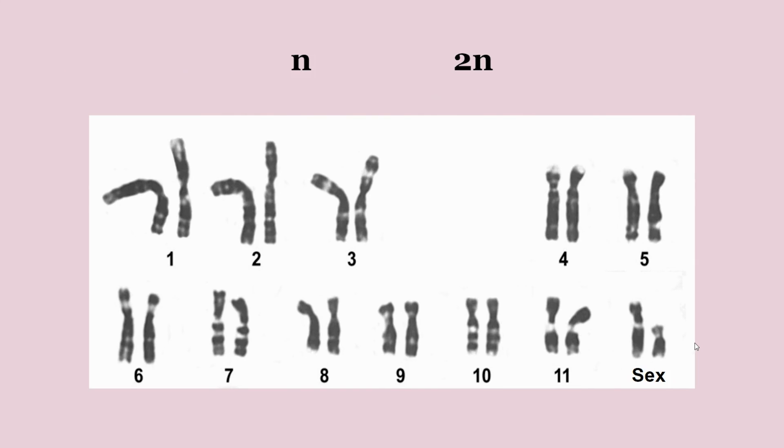As you can see with this karyotype, there are two 1 chromosomes, two 2 chromosomes, etc. These pairs are homologous chromosomes. They have the same genes, but they can have different alleles, so they're not identical. Typically one comes from each parent.